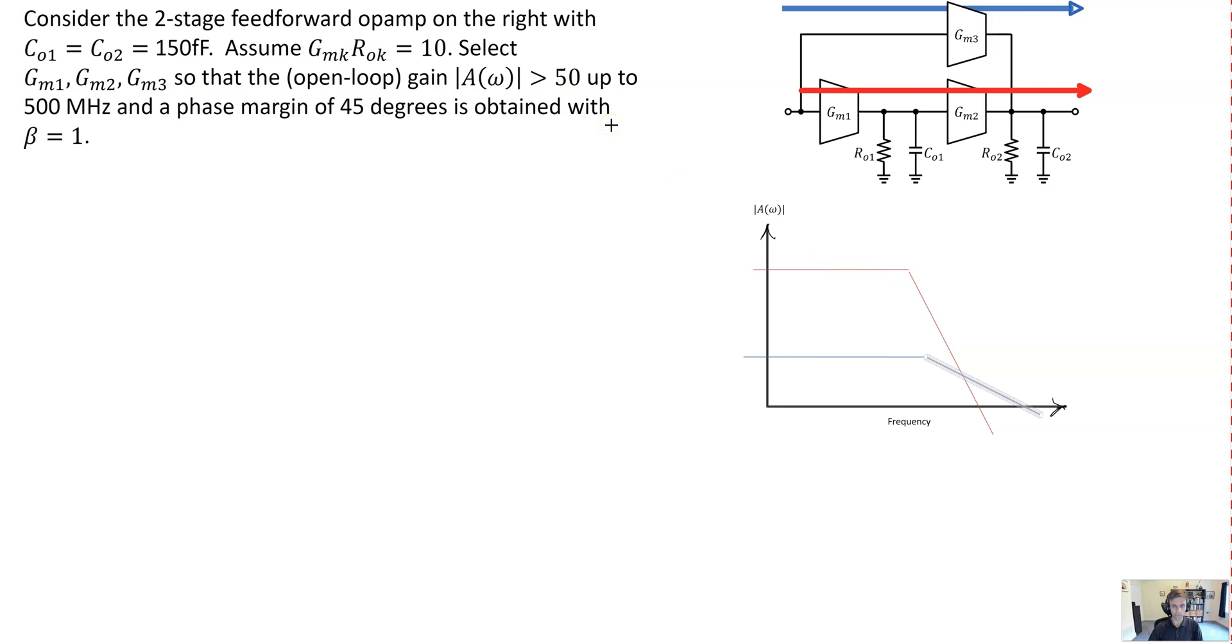So that'll occur when the two poles arising due to these two nodes both arise right at 500 megahertz. So that will ensure that each of the poles introduces minus 3 dB compared to the DC gain. For total minus 6 dB, that'll give us our gain of 50 at 500 megahertz.